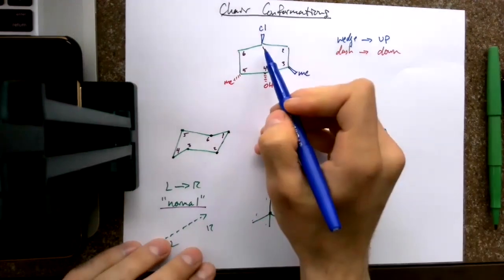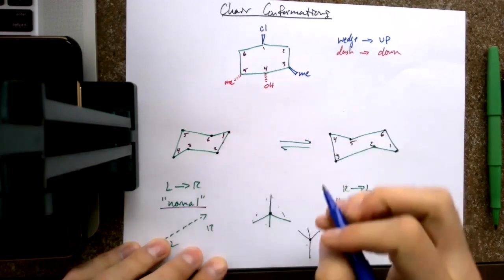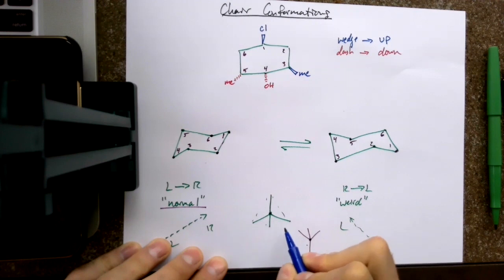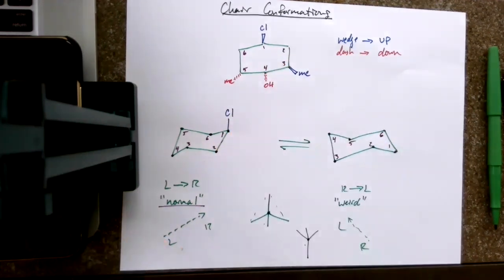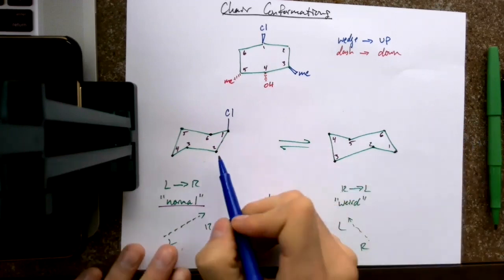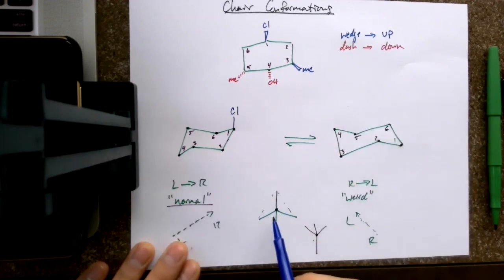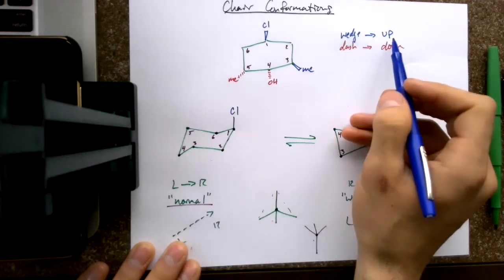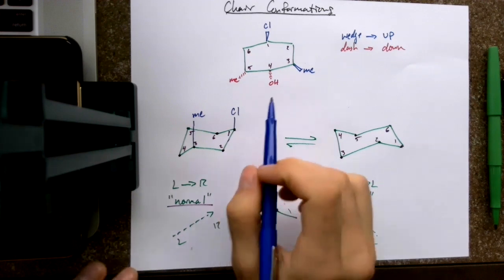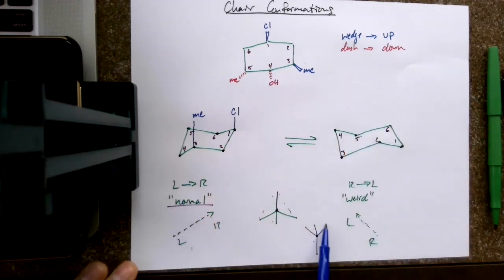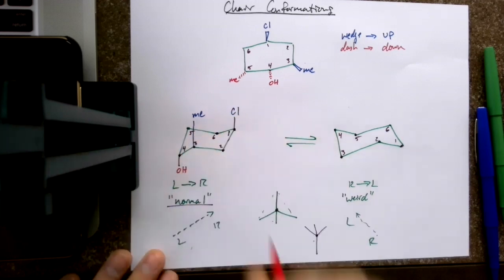On carbon one, we have a chlorine going up. This carbon adopts the tetrahedral geometry in which three are sprawling down and one is pointing up. Since chlorine is up, the only position to go up is perfectly vertical, which is axial. When I go to two, I see there's nothing. When I go to three, it's pointing up, and three also adopts that geometry — three sprawling down and one going up — so it's axial up. When I look at four, it's going down. Four has three groups sprawling up and one going directly down, so it's going to be axial directly down.